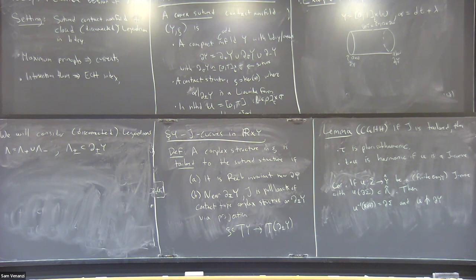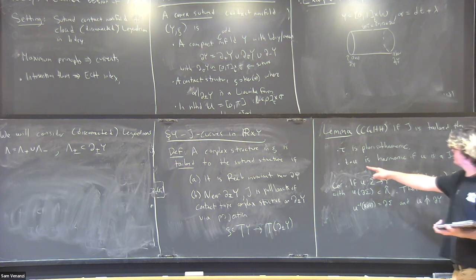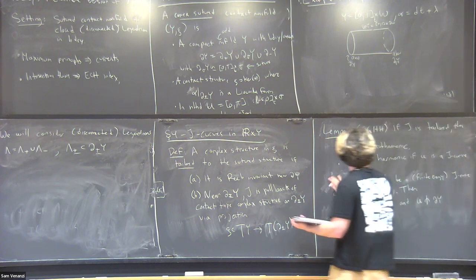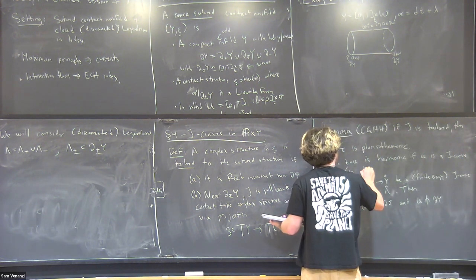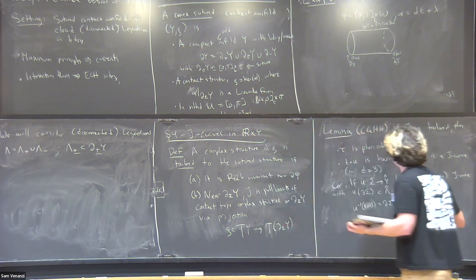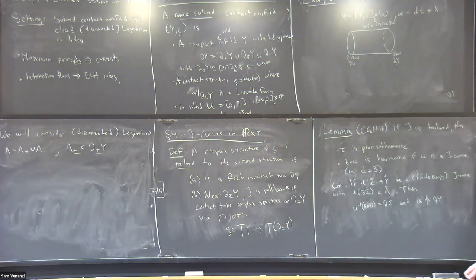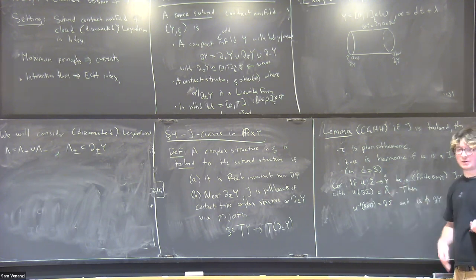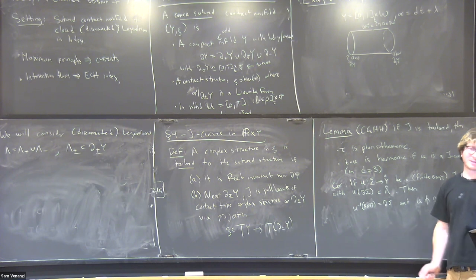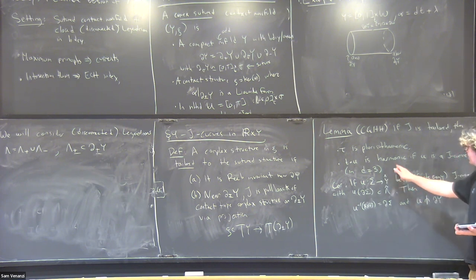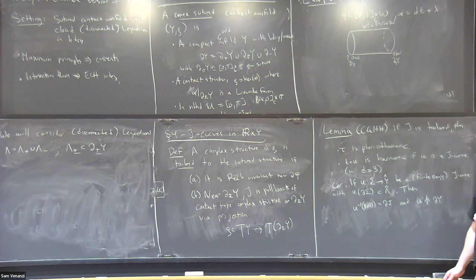The second point—T being harmonic—is specific to dimension two, where it's always true. In higher dimensions you need the complex structure to be tamed, specifically you need the symplectic form to be d(alpha circ J). In dimension two, these issues are much easier because you can always make the complex structure compatible with some Stein structure on the surface.